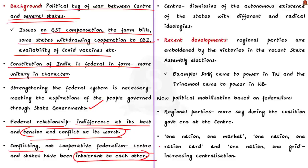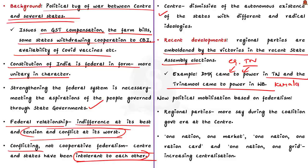As the history of conflicting rather than cooperative federalism shows, both the center and states have been intolerant to each other. In many cases, the center was dismissive of the autonomous existence of states with different and radical ideologies. There are cases when the center had been discriminatory in its attitude towards states with oppositional political backgrounds. But many regional parties are emboldened by the victories in recent state assembly elections. For example, the DMK that came to power in Tamil Nadu and the Trinamul Congress that came to power in West Bengal. The DMK-led government in Tamil Nadu has stopped referring to the BJP-led government as 'center' and started referring to it as the 'union government.' Does all this indicate a new political mobilization based on federalism? The regional parties had more say during the coalition government era at the center. But with the shift towards a single party, i.e. BJP-led system, the rift over power sharing is clearer.